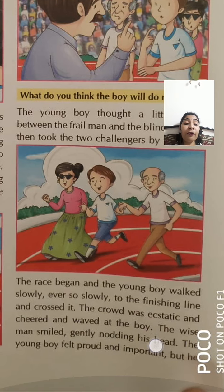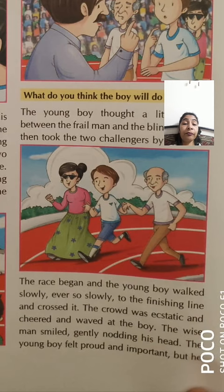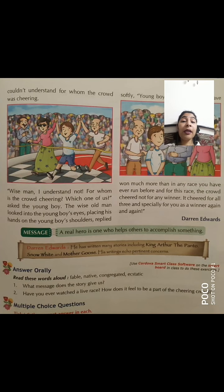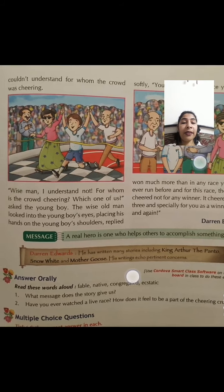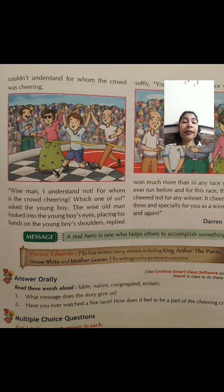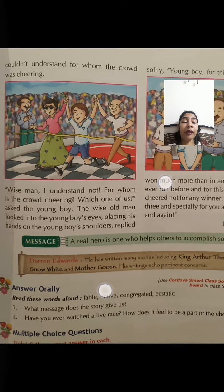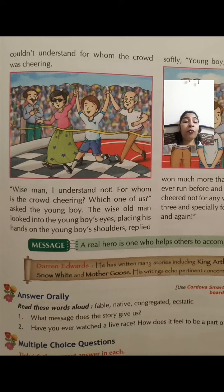The young boy felt proud and important, but he could not understand for whom the crowd was cheering. He asked the wise man: 'I understand not — for whom is the crowd cheering? Which one of us?' From the three of them, for whom was the crowd cheering? That was the boy's question.